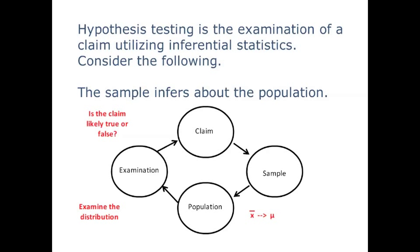And as we examine the distribution against the claim, we're going to make some assumption or conclusion as to whether the initial claim is likely true or false based upon the sample that we took and the sample descriptors and what they imply about the population. And then as we examine the distribution of the population and where the claim falls, whether or not the claim is likely true or false. Pretty interesting, isn't it?